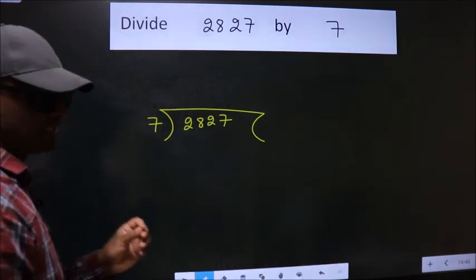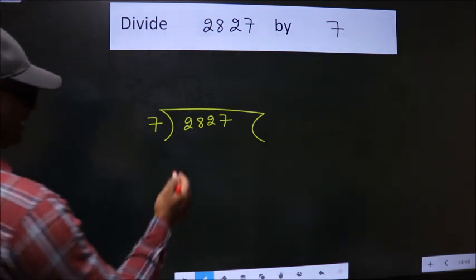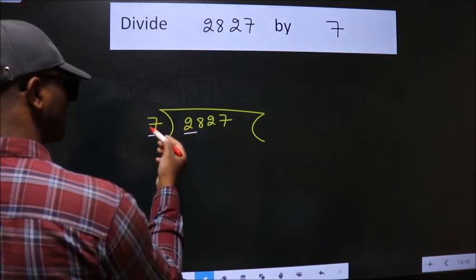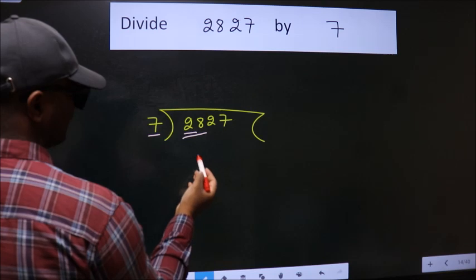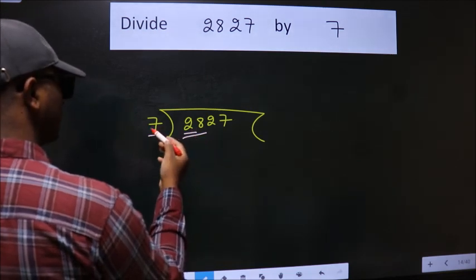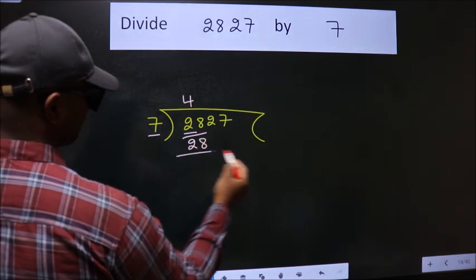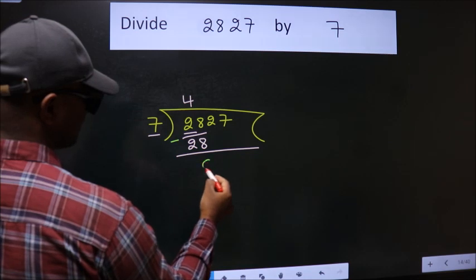This is your step 1. Next, here we have 2, here 7. 2 is smaller than 7, so we should take two numbers: 28. When do we get 28 in the 7 table? 7 times 4 is 28. Now we should subtract. We get 0.